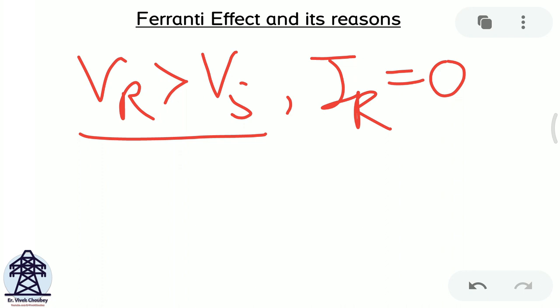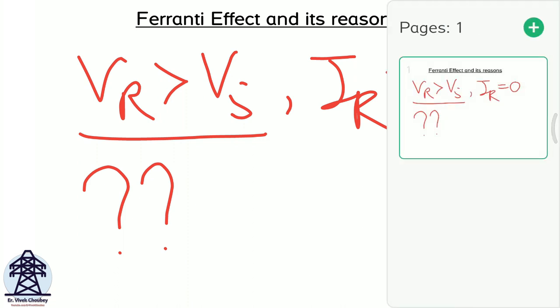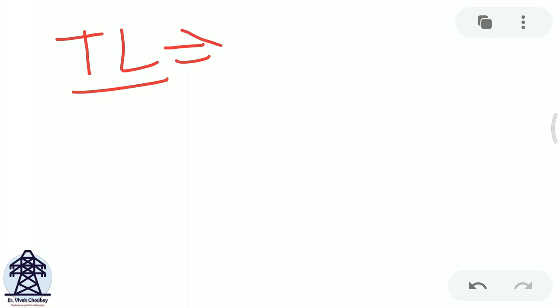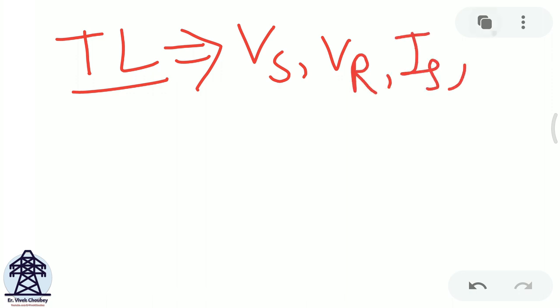In this video we will discuss why the Ferranti effect happens — why the receiving end voltage suddenly goes beyond the sending end voltage. Before we start, we need to look at a transmission line. The four most important factors when analyzing a transmission line are: sending end voltage, receiving end voltage, sending end current, and receiving end current.